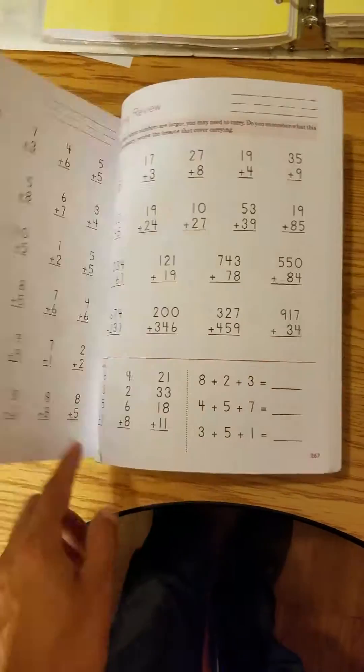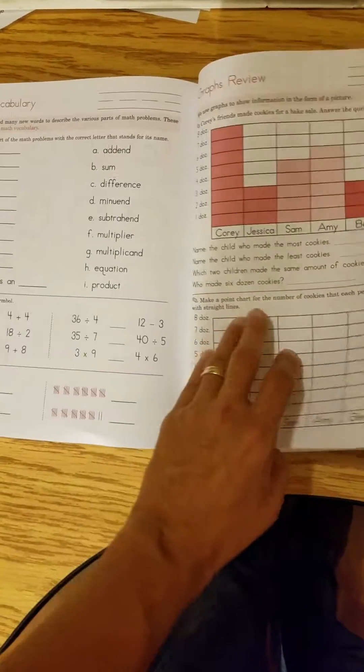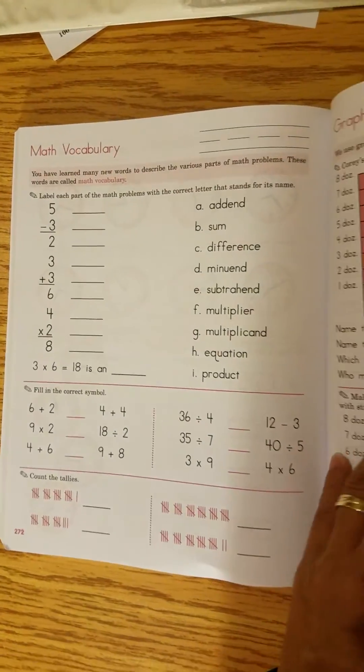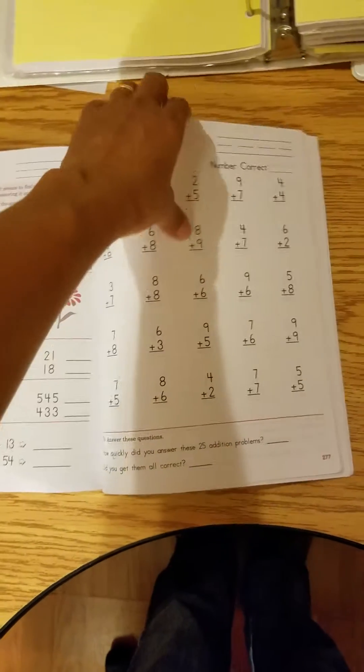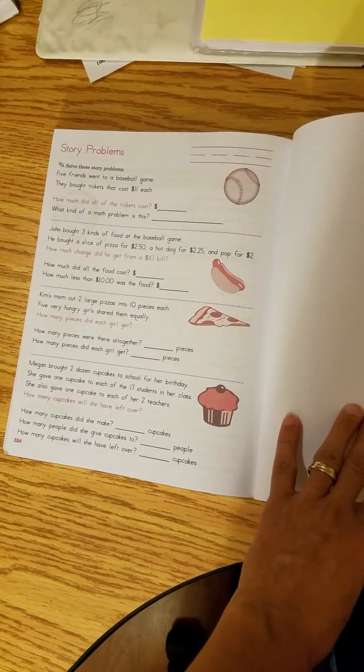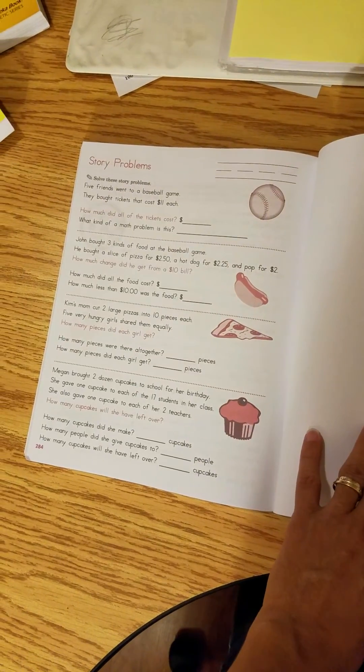Balance and equations. A lot of review here near the back, looks like. And even the math vocabulary, map study, rounding and estimating. And that's the last page.